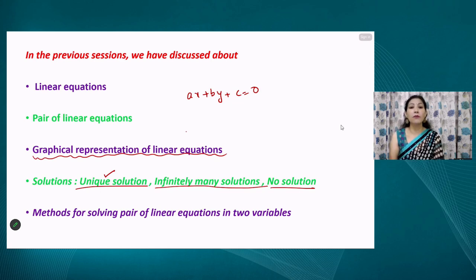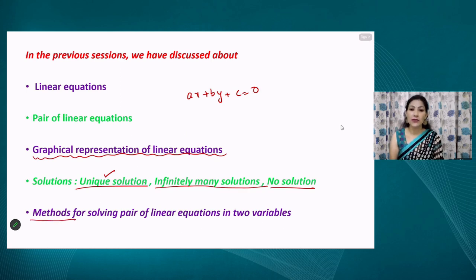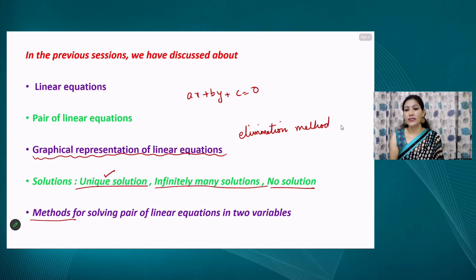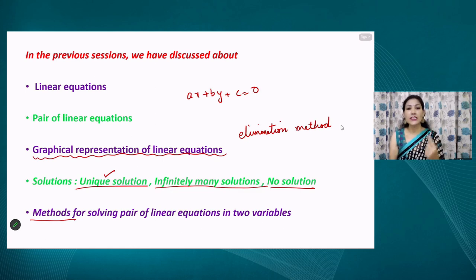We discussed the graphical representation of linear equations in two variables — these can be parallel lines, coincident lines, or intersecting lines. We also discussed methods for solving equations: the graphical and algebraic methods. For algebraic methods, there are two methods we will discuss in this class — the substitution method, which we already discussed, and the elimination method. The cross multiplication method has been eliminated from our NCERT books.